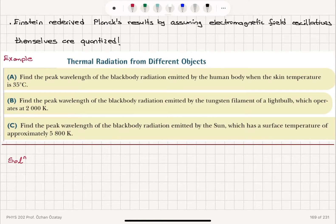This was basically restated by Einstein that we can also assume the electromagnetic field oscillations themselves are quantized. Einstein here is talking about energy packets called photons that are carrying the energy in an electromagnetic field. Let's take a look at a few examples. Thermal radiation from different objects.